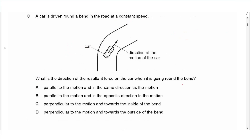Question 8: The resultant force on any object moving in a circular or curved path is directed towards the centre of the circle, perpendicular to the velocity. It is not parallel to the motion — it is perpendicular. And it acts towards the inside of the bend, which is towards the centre. Answer is C.